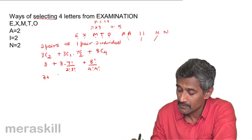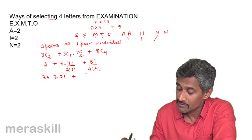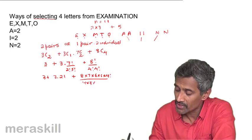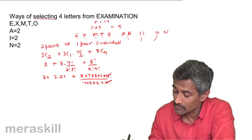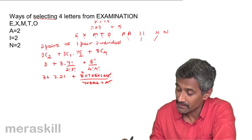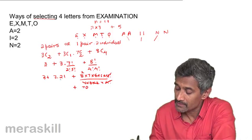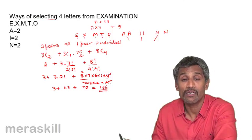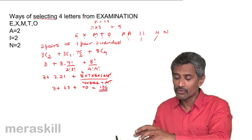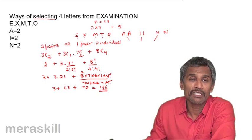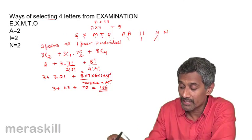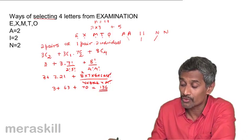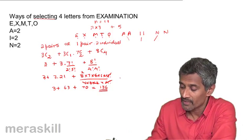So the total is 3 + 63 + 70 = 136. Wait, that is 3 + 63 = 66, plus 70 = 136. So 136 such selections are possible. Note there is no specific formula here — unlike permutation with repetition, for combinations with repetition we choose logically case by case.